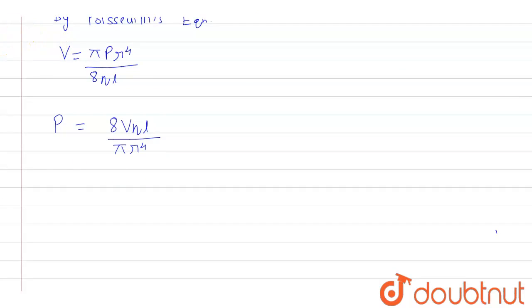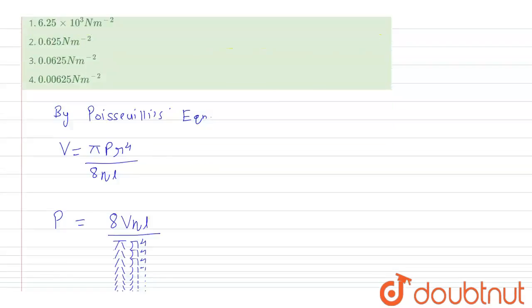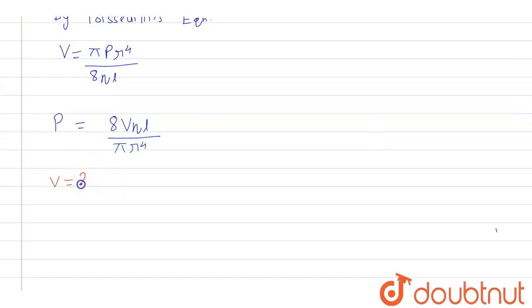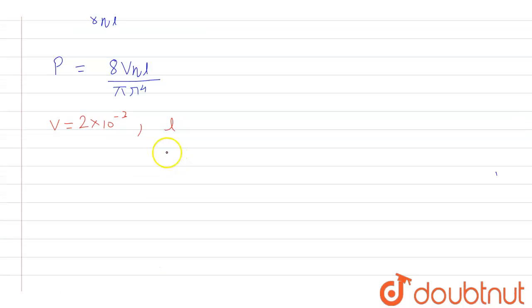So here v is given as from the question it is 2 into 10 raised to the power minus 3, while the value of length is 3140 in meter, so that is 3140.